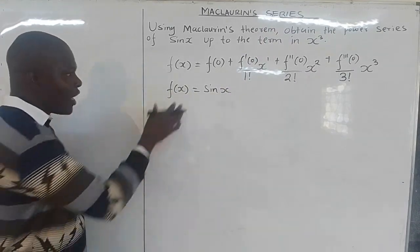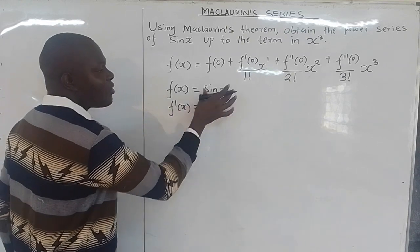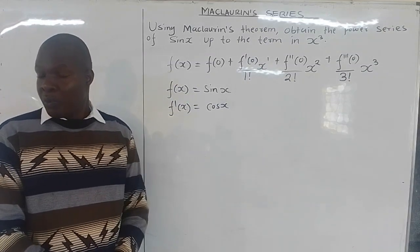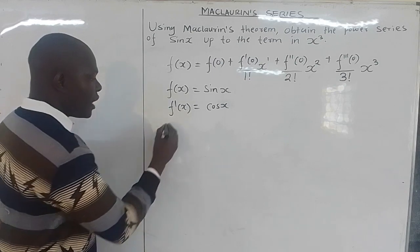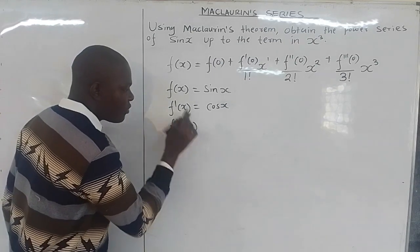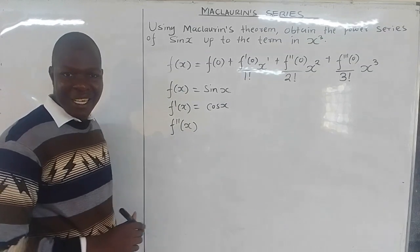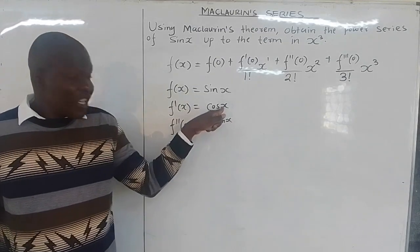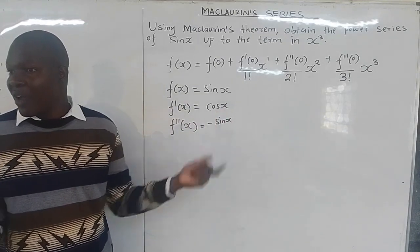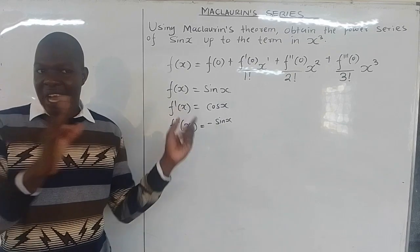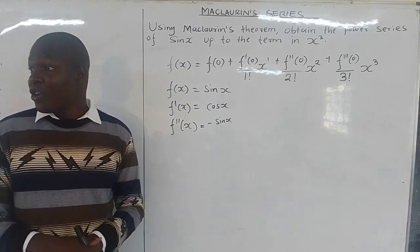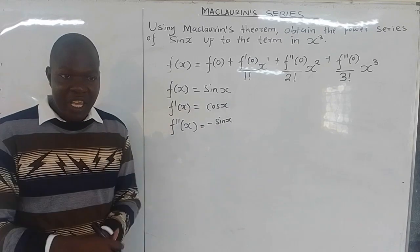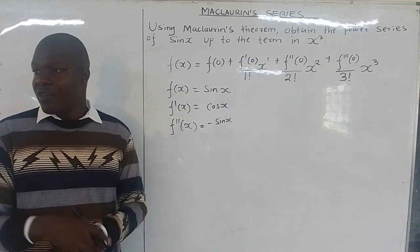If you differentiate f(x) = sin x for the first time, you get f′(x) = cos x. If you differentiate a second time, f″(x): differentiating cos x gives negative sin x. The inner function is x, and differentiating x gives 1, so we don't need to apply the chain rule further. Therefore f″(x) = −sin x.